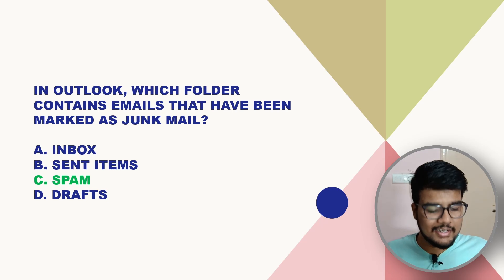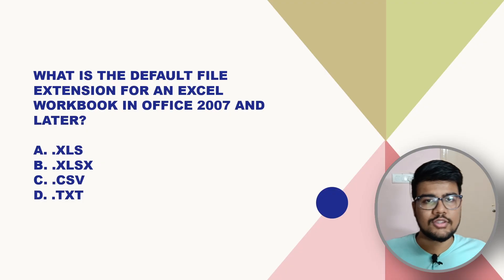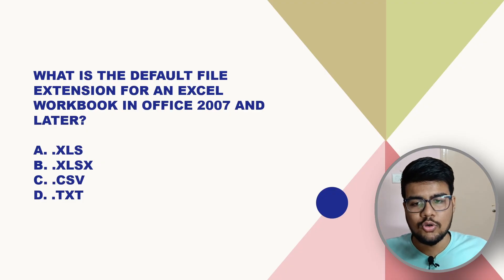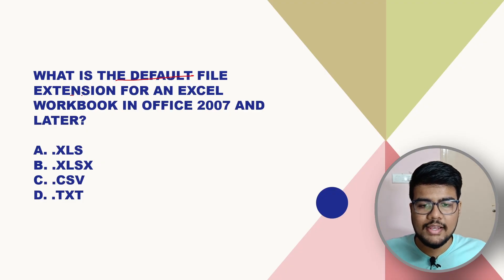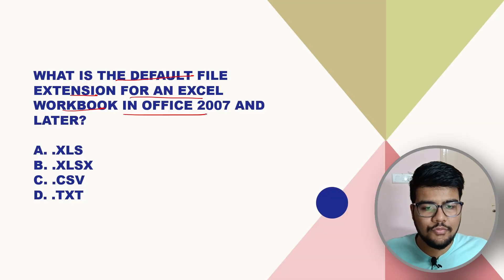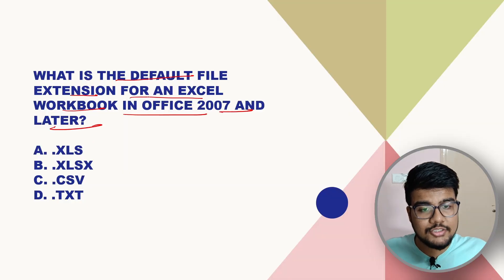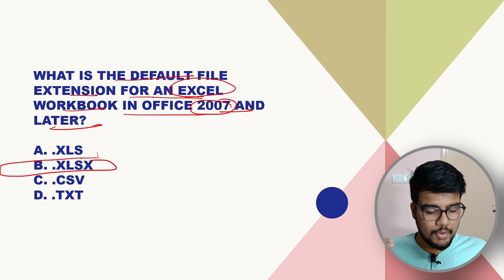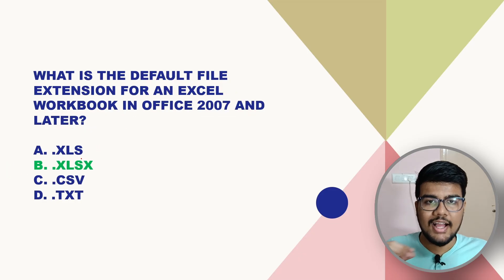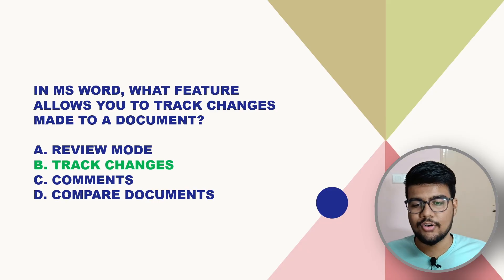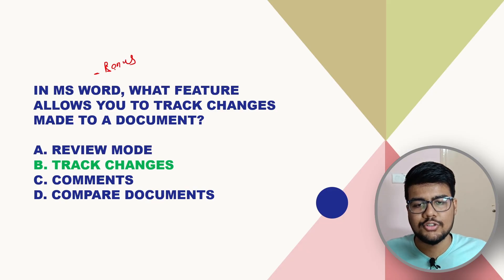What is the default file extension for an Excel workbook in Office 2007 and later? Checking the answer — it is .xlsx. That gives four correct answers in a row — a bonus streak for you.